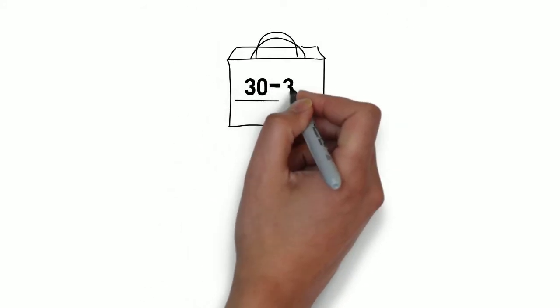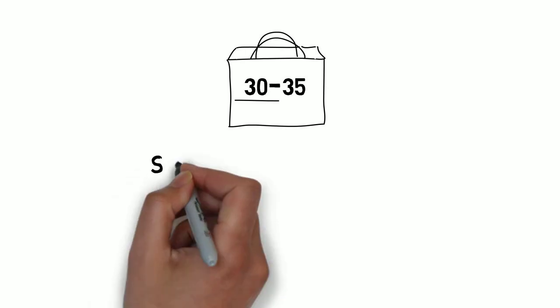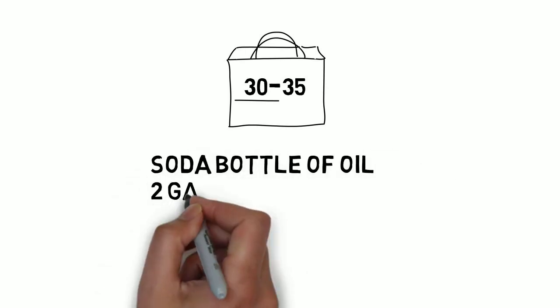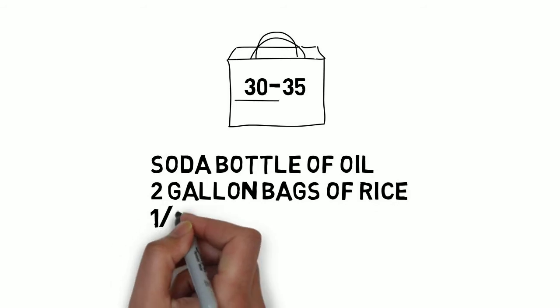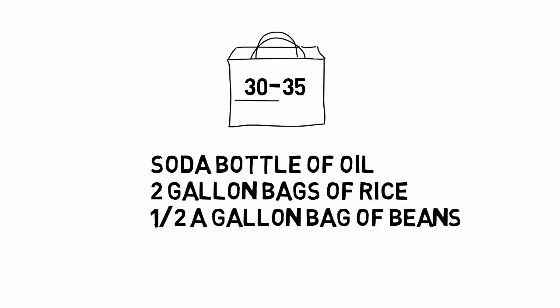Afterwards, we divided it into 30 to 35 packages, each containing a soda bottle of oil, two-gallon bags of rice, and half a gallon bag of beans.